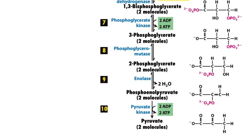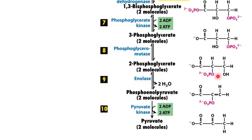In step number 8, this 3-phosphoglycerate gets converted into its isomer which is the 2-phosphoglycerate by the action of the enzyme called phosphoglyceromutase. In step number 9, the enzyme enolase acts on 2-phosphoglycerate and removes a molecule of water from it, thus producing a molecule called phosphoenolpyruvate or PEP.